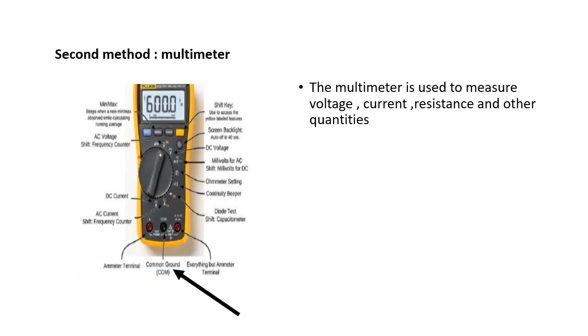Now, to measure a DC voltage, we can also use a multimeter. A multimeter, as its name, is a meter or instrument used to measure many quantities: voltage, current, resistance, and other quantities. So we can use the multimeter to behave as a voltmeter so that we can measure the DC voltage of a load.